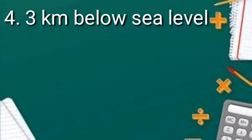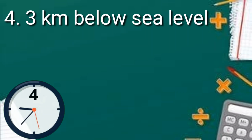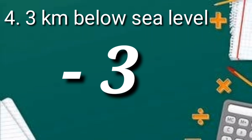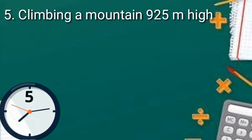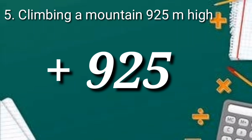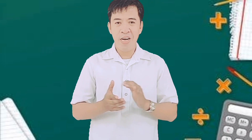Number four: three kilometers below sea level — the answer is negative three. Number five: climbing a mountain 920 meters high — the answer is positive 920. Very good, kids!